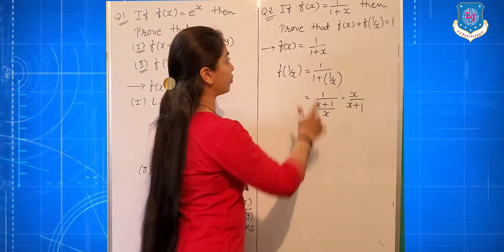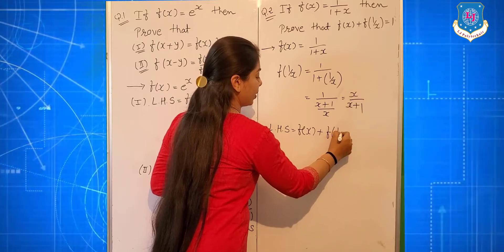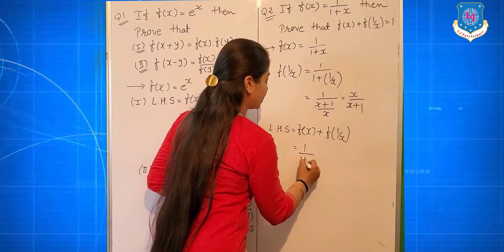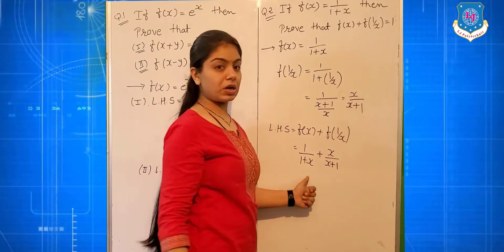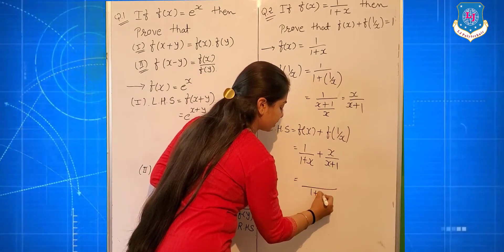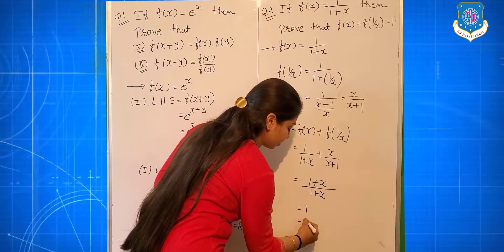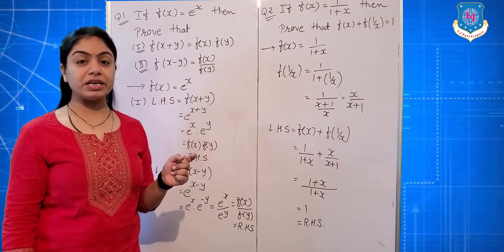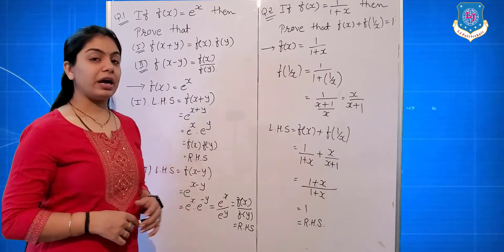Now, LHS is f(x) + f(1/x). Substituting: 1/(1+x) + x/(x+1). Since 1+x and x+1 are equal (addition is commutative), the denominators are the same — that is (1+x). The numerator becomes 1+x. So (1+x)/(1+x) cancels out to give 1, which is our RHS. Both questions are of the function type and very easy — they are also asked in examinations.